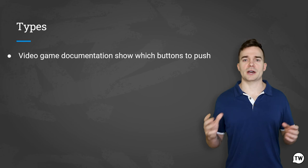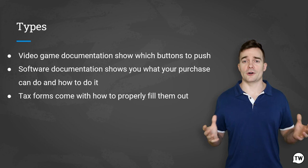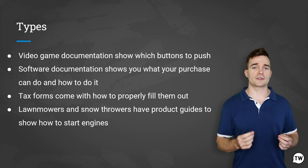User documentation takes many forms. Video game documentation tells you which buttons to push to shoot the bad guys. Software documentation shows you what your purchase can do and how to do it. Tax forms come with guides on how to properly fill them out. Lawn mowers and leaf blowers have product guides to show you how to start the engines and where to refill the fuel. There are various methods to make knowledge bases available — a website is usually the best way, but consider that people with disabilities will also be using it, so accessibility is important.